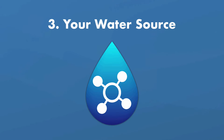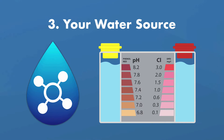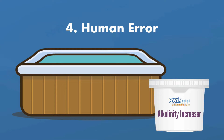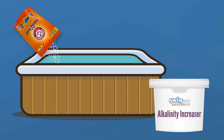Three: your water source. You may live in an area where your local water supplier has a high alkalinity reading. Ask your local water district for a water reading — most places will provide one. Four: human error. You could have accidentally had a heavy hand in adding alkalinity increaser or baking soda.